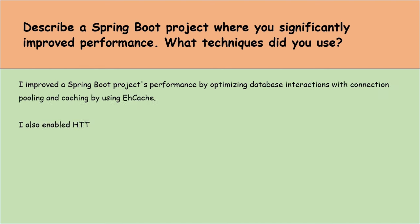Discuss the configuration of Spring Boot security to address common security concerns. To make a Spring Boot application secure, I would set up a few things with Spring Security. First, make sure users are authenticated through a login system — either a simple username/password form or using accounts from other services. Next, control what parts of the application each user can access based on their roles. I would also switch on HTTPS to keep data safe in transit. Spring Security helps stop common web attacks like CSRF by default, so I would make sure that's enabled. Plus, I would manage user sessions carefully to avoid hijacking, and store passwords securely using strong hashing.